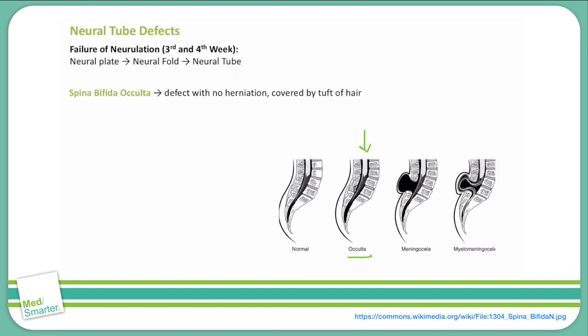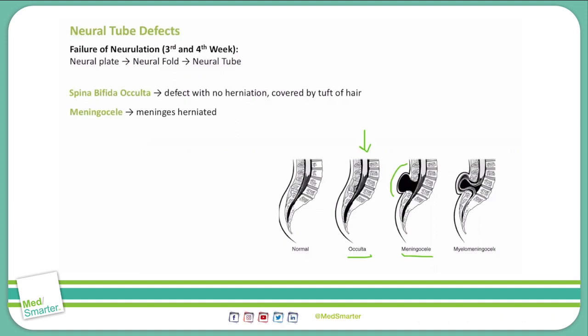The next neural tube defect is a meningocele. This defect is similar to spina bifida occulta in that there's a defect in the spine, but this time there's a herniation of some of the contents out of the defect. It's important to note that only the meningeal layer of the spinal cord has herniated — none of the tissue of the spinal cord, the cauda equina, or any nerves have actually come out of the defect.